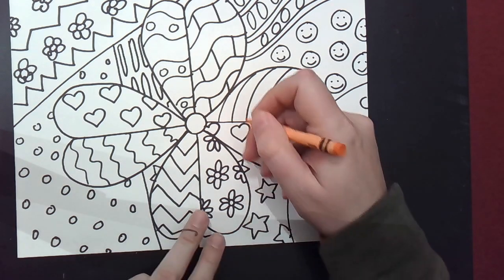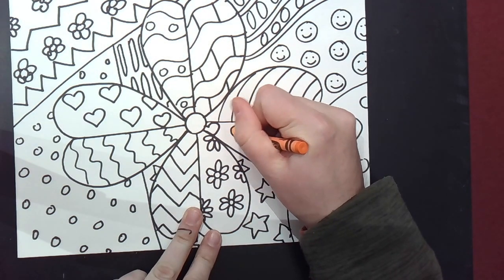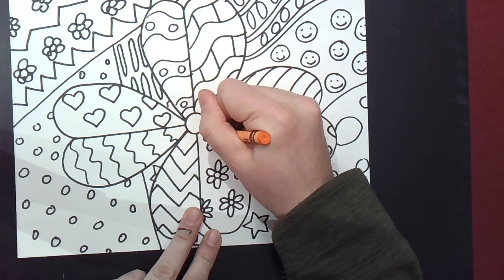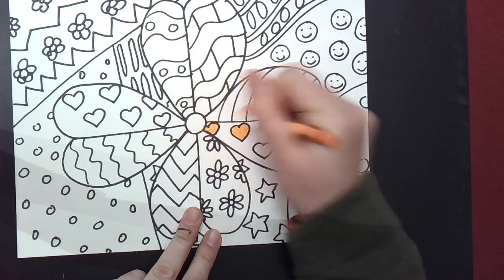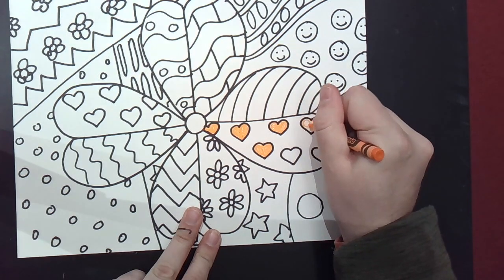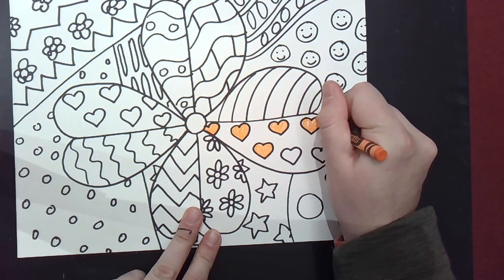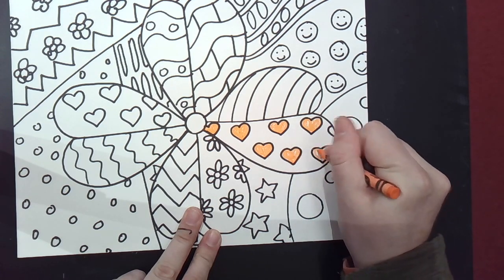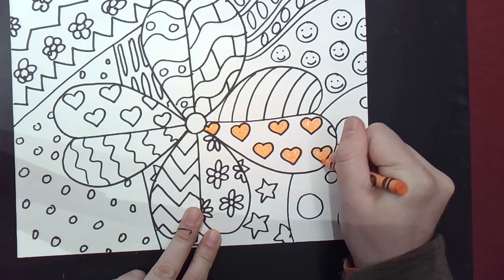Now, when it comes time to color these, we really don't want any white space. It's okay to have a little bit of white. Like if I wanted to leave the stars white, for example, I think that would be fine. But I'm not ever going to leave a section with like these orange hearts. I wouldn't leave the background white. It's going to need some color. Romero Brito's artwork was colorful.